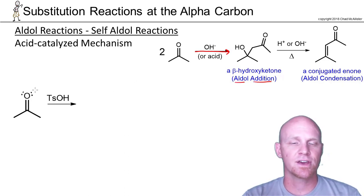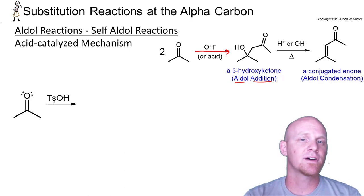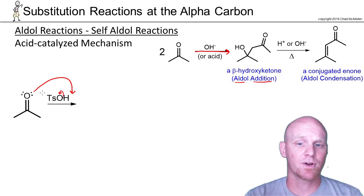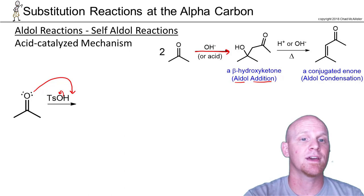In this case, the first thing you're going to do is form an enol through tautomerization. Tautomerization is just two steps. As you might recall, under acid-catalyzed conditions, the first step is a protonation.